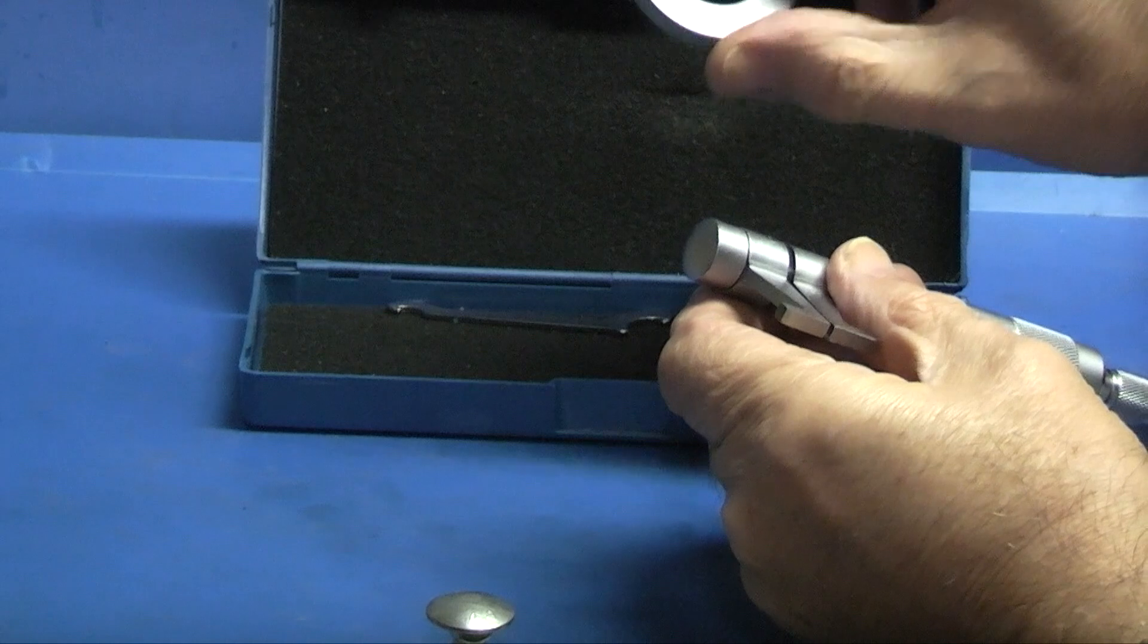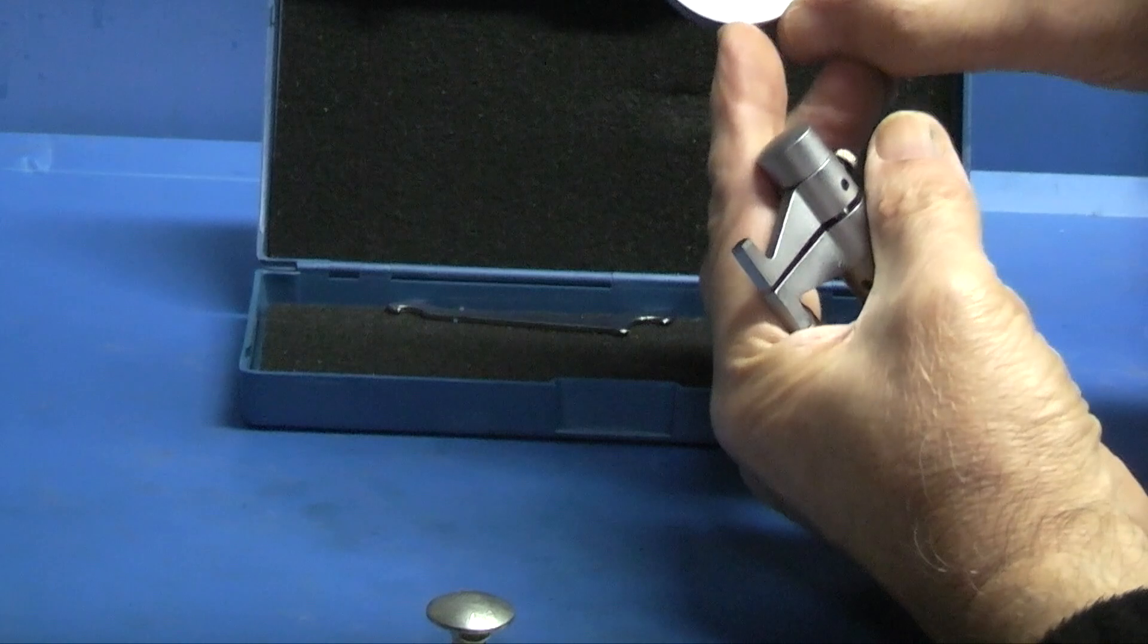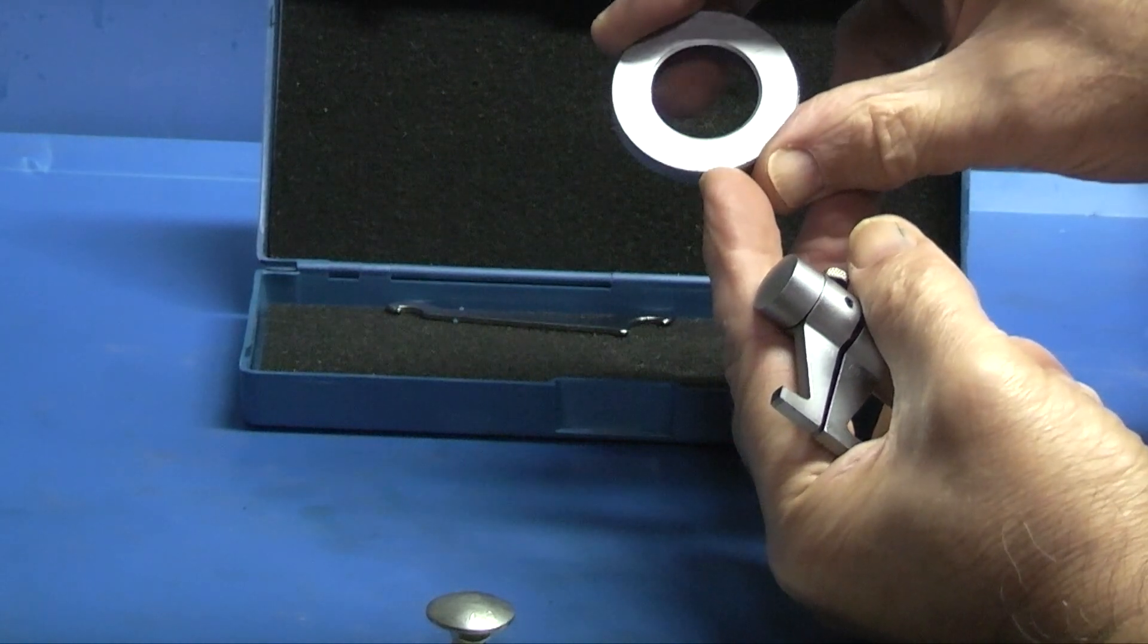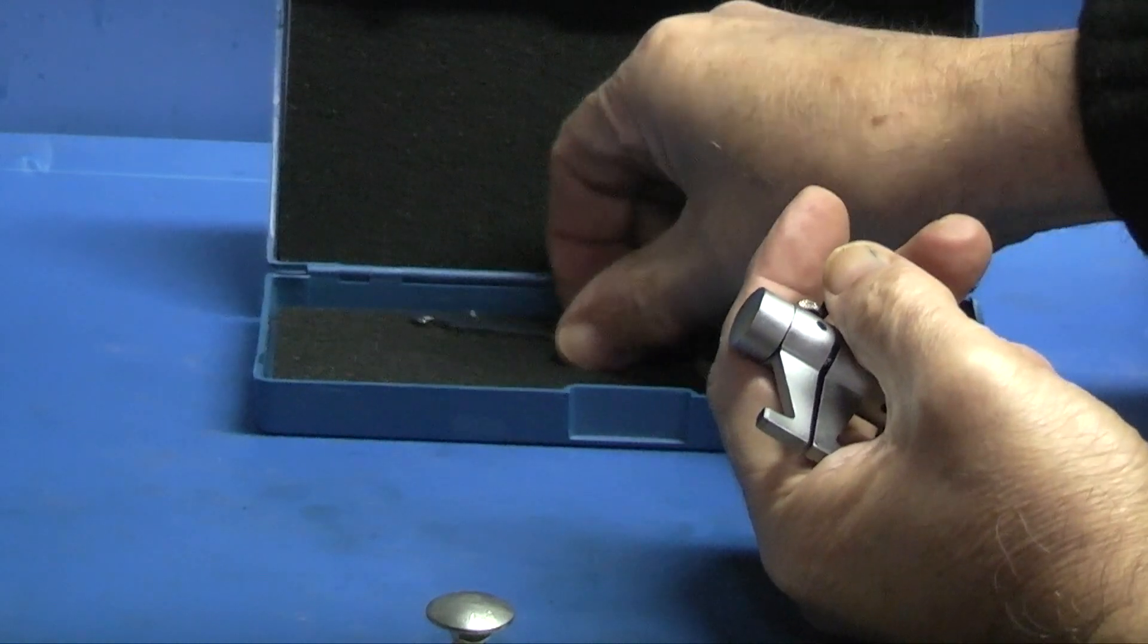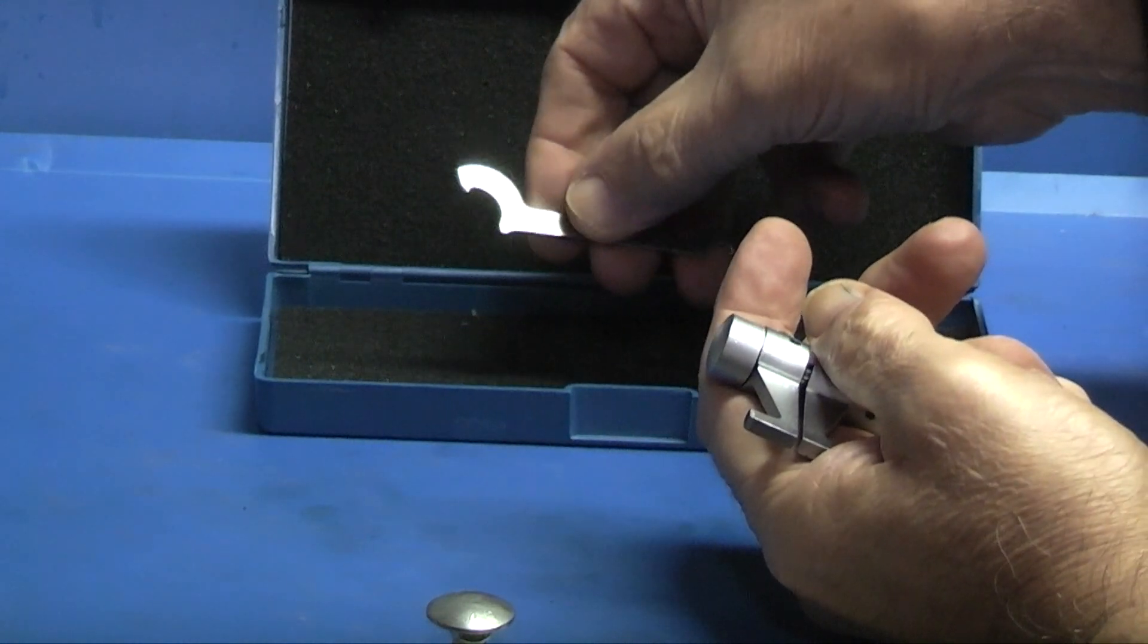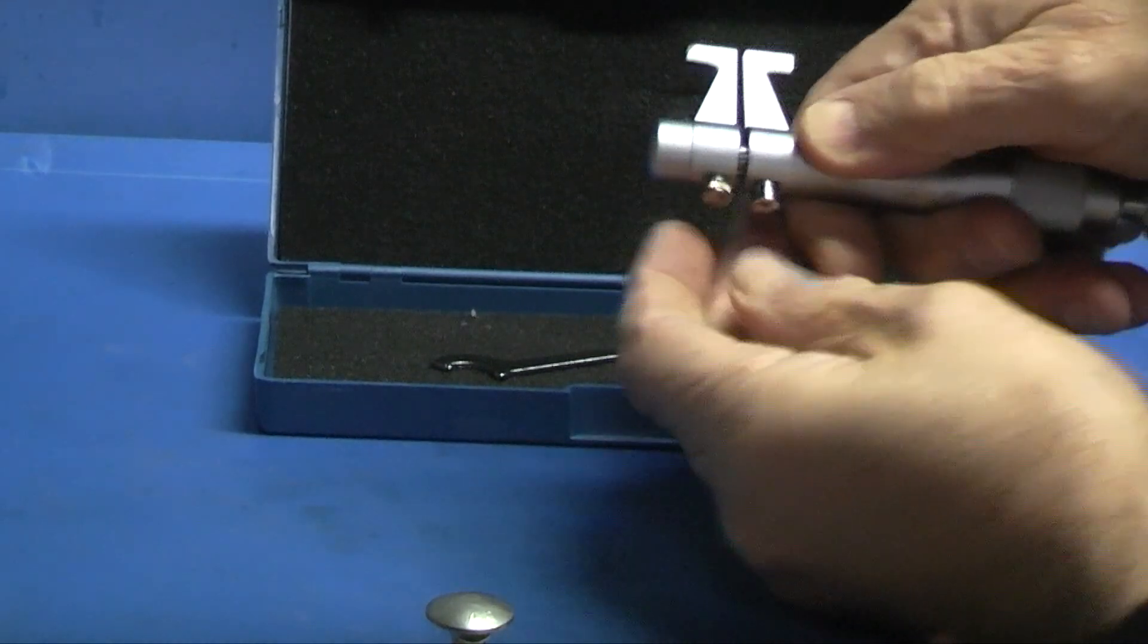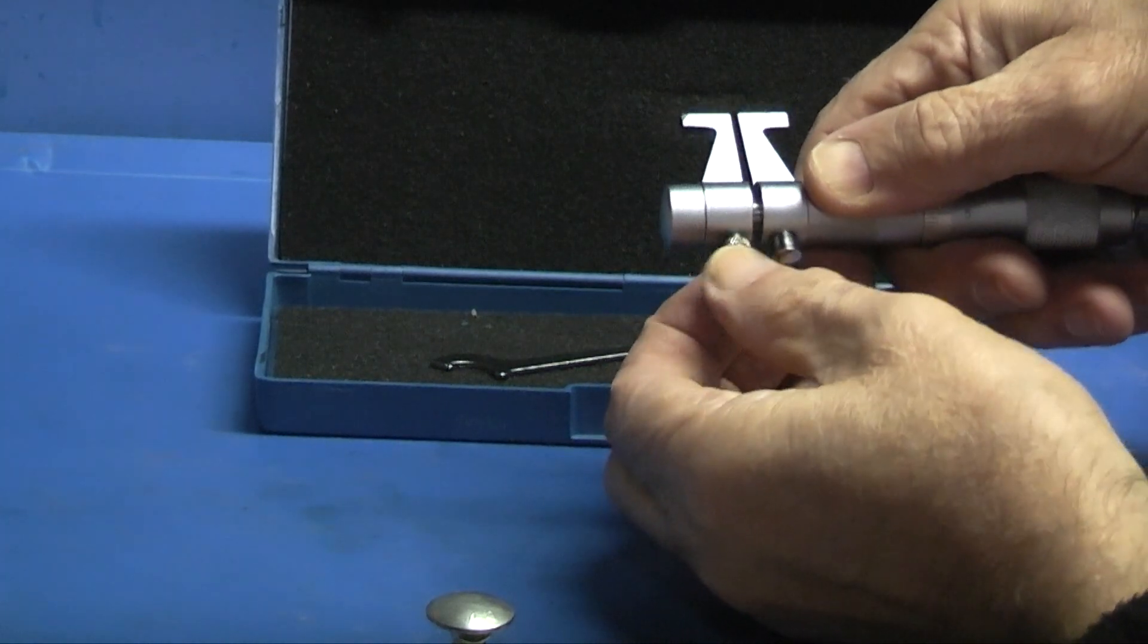It comes with a 25 millimeter setting ring. It says on there 25 but you can't make it out very well, it's very faint. And an adjusting spanner to zero the datum line. You can lock the spindle by turning this small knurled screw.